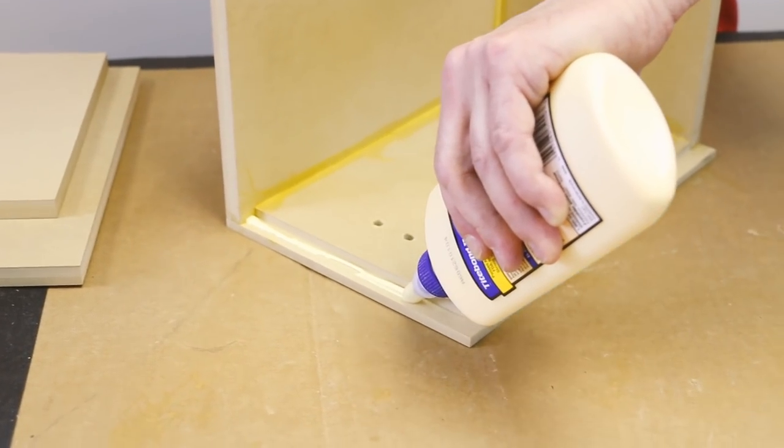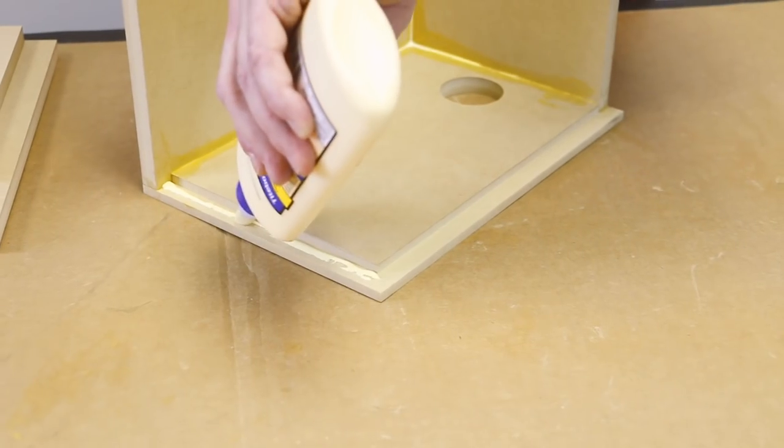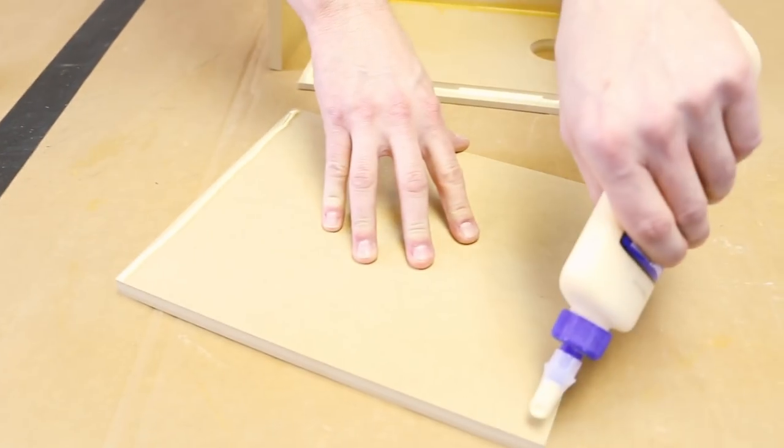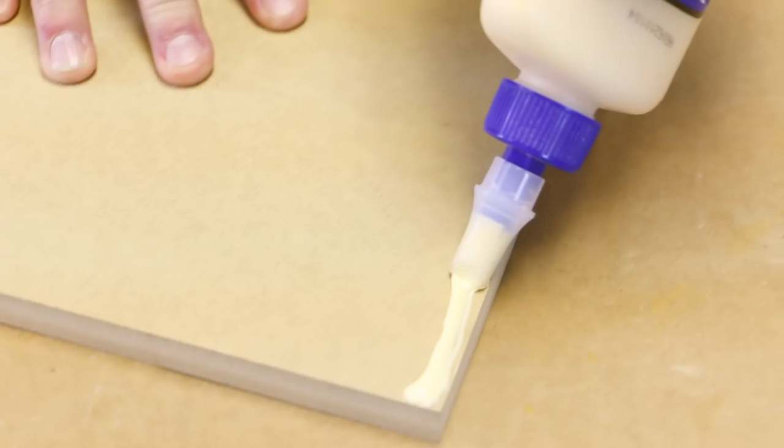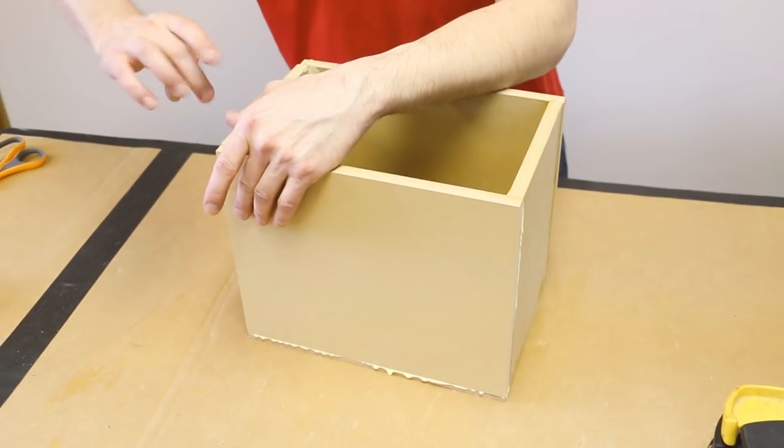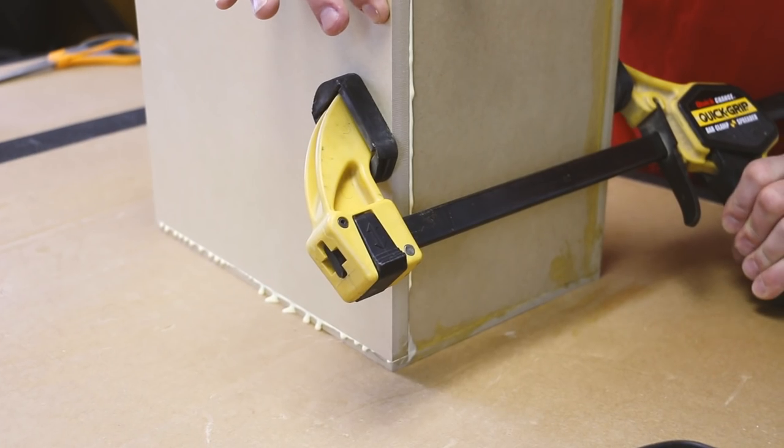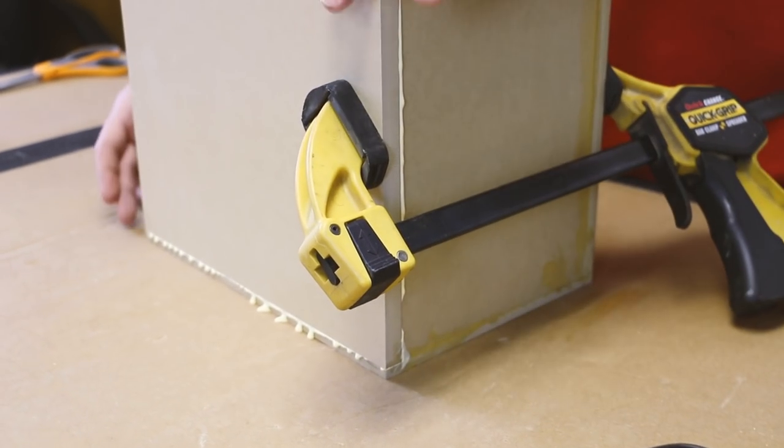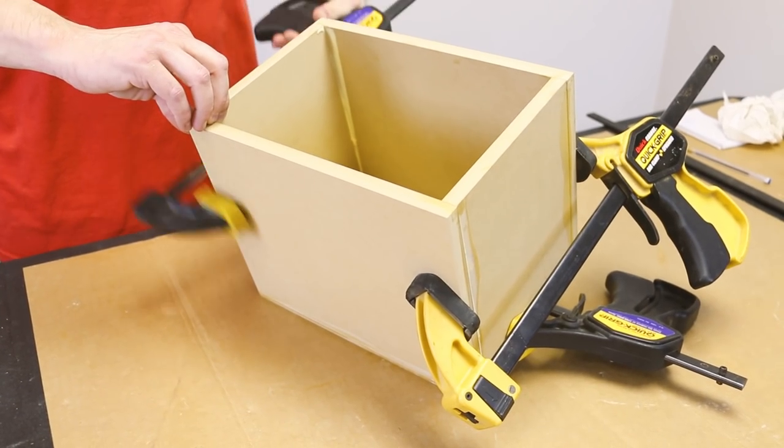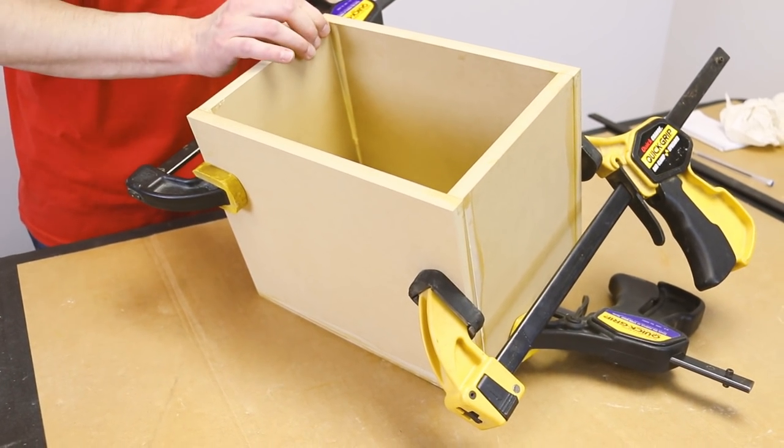Once these pieces are set and dried, come back and add the bottom and other side. Make sure to apply glue to all touching surfaces and be glad that you don't have excess dried glue stopping pieces from fitting properly. Again, apply clamps to make sure everything is secure and set it to dry.